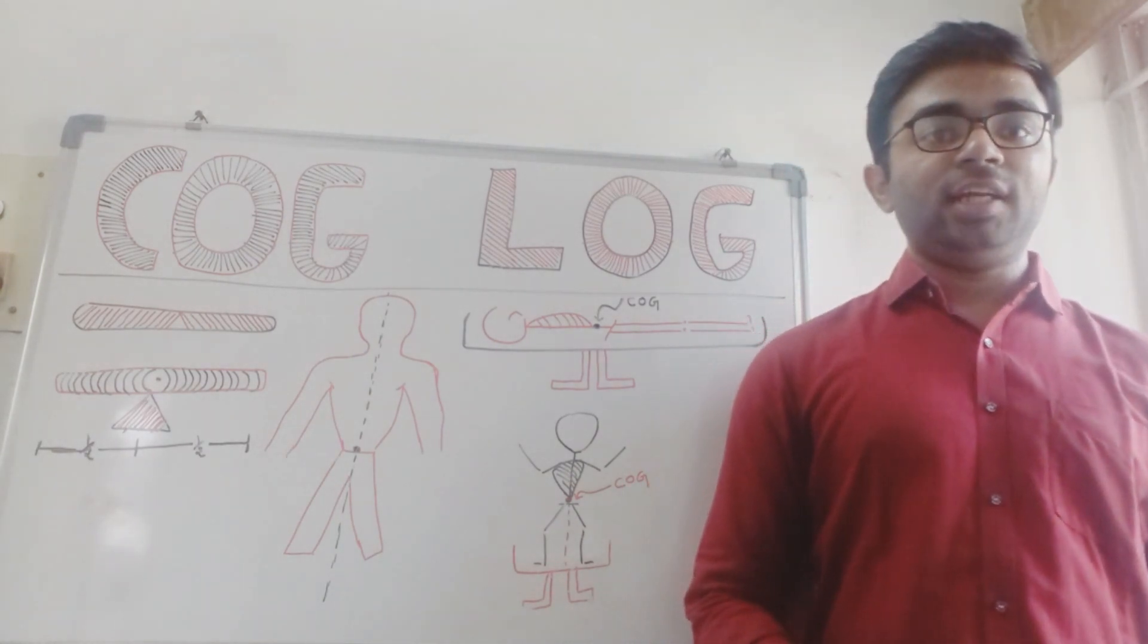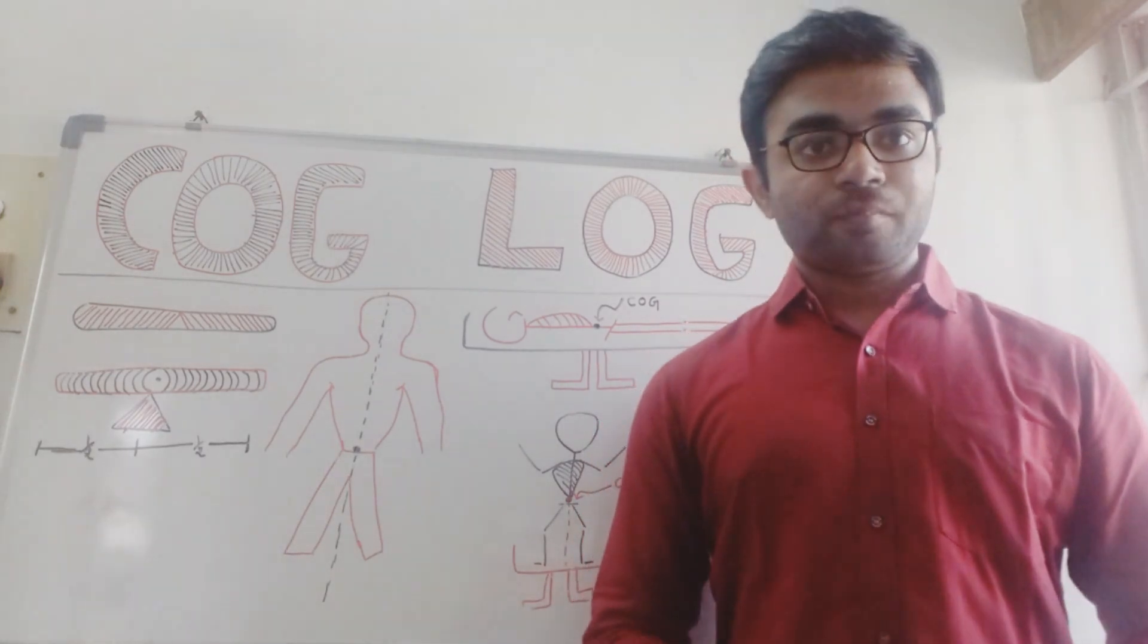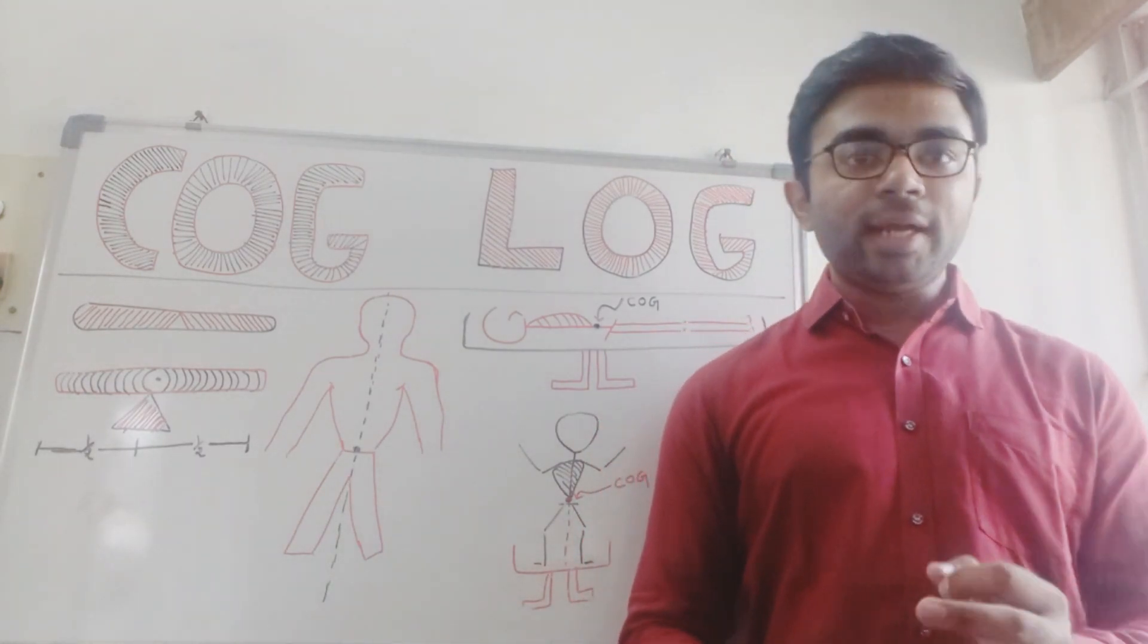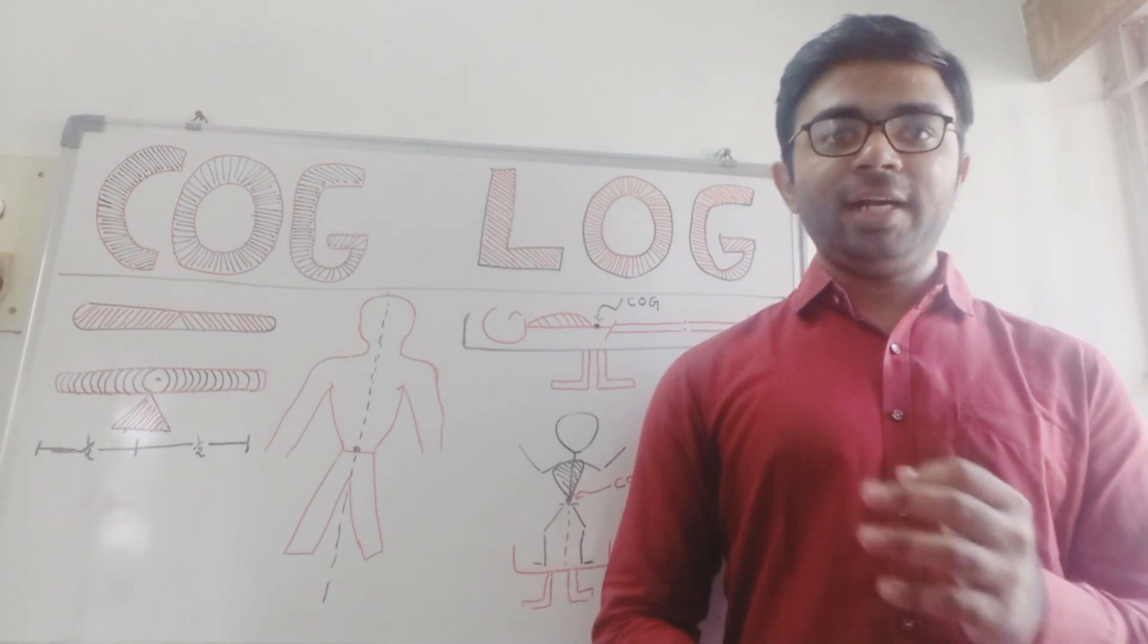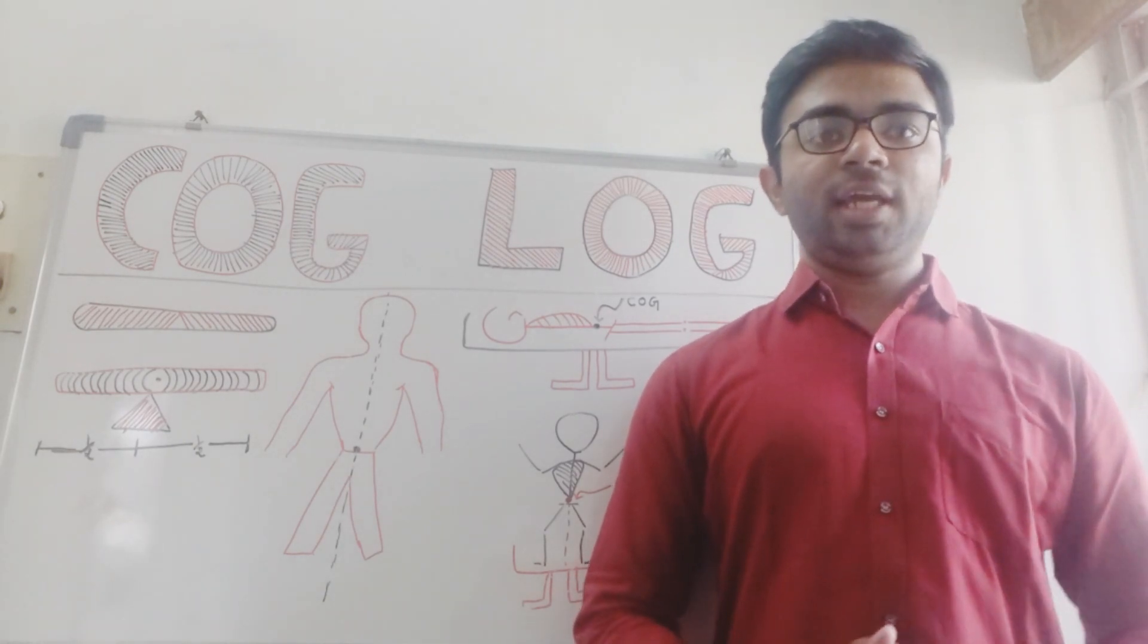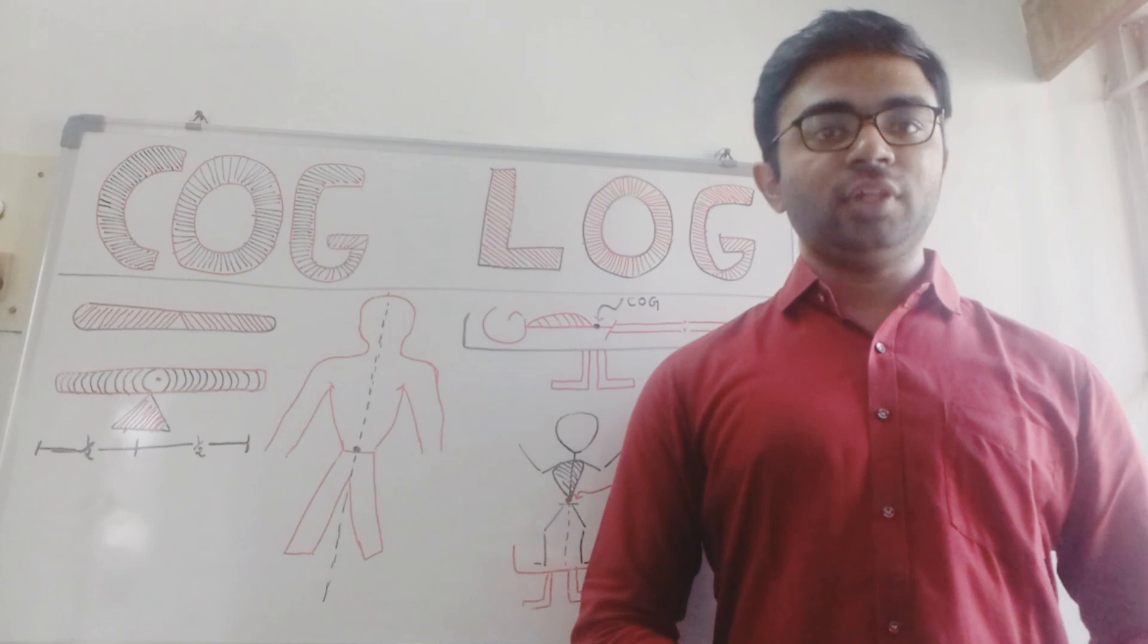So when a person assumes an erect posture, the line of gravity passes through the mid cervical area, mid lumbar area, and exactly in front of the thoracic region.